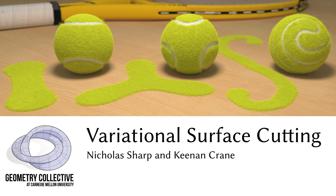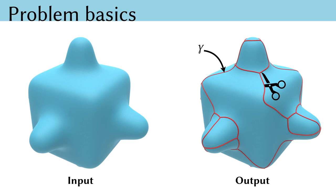This is Variational Surface Cutting by Nick Sharp and Keenan Crane. Today we'll talk about low distortion surface cutting. By surface cutting I mean given a surface, we wish to compute a cut network gamma, and furthermore we want the surface to be easy to flatten out after being cut.